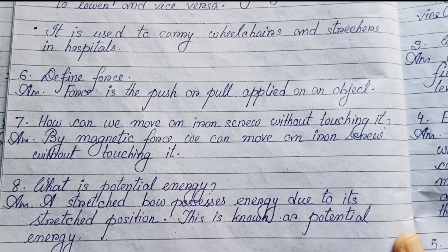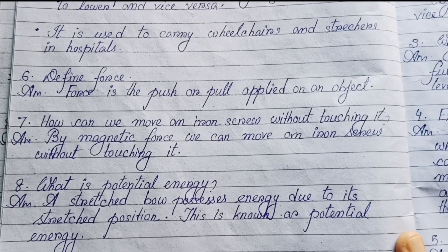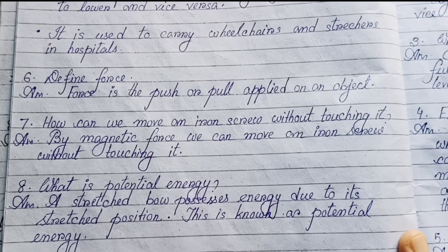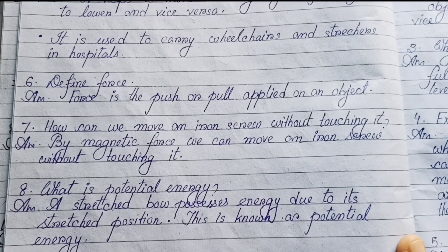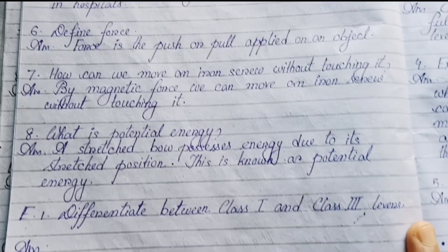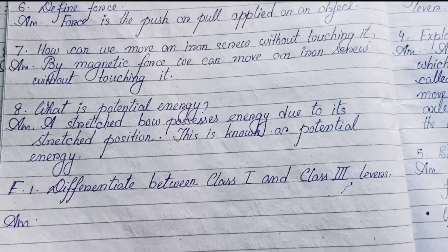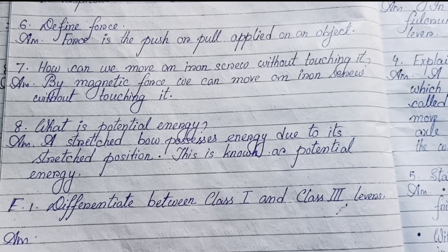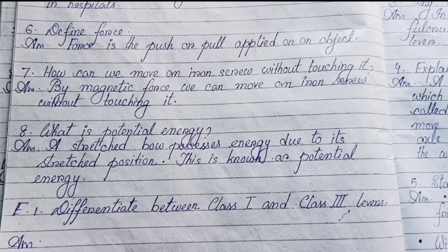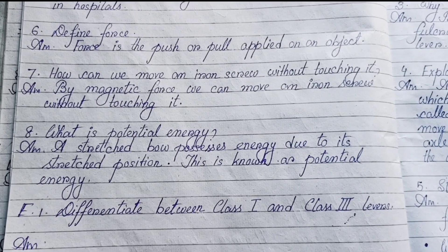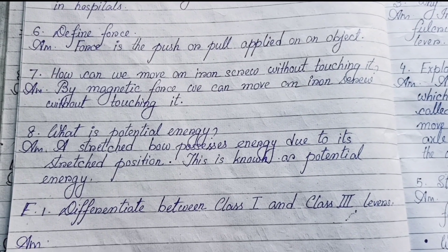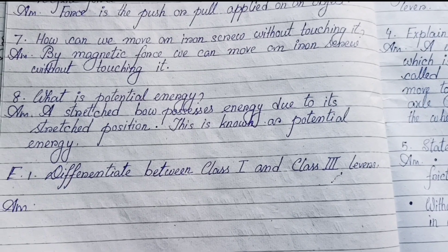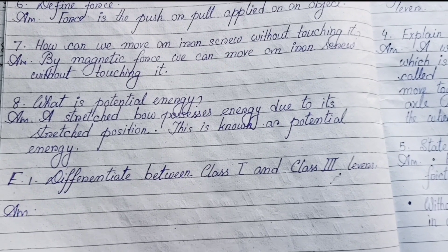Number seven: How can we move an iron screw without touching it? By magnetic force, we can move an iron screw without touching it. Number eight: What is potential energy? A stretched bow possesses energy due to its stretched position. This is known as potential energy.